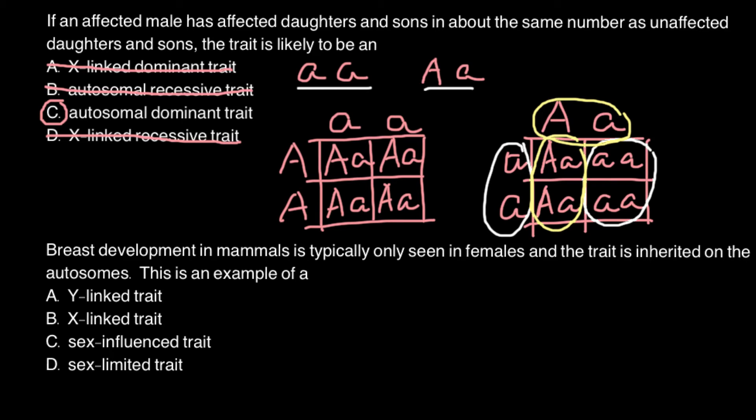And next question: breast development in mammals is typically only seen in females, and the trait is inherited on the autosomes. This is an example of, and here are four answers to choose from: answer A, Y-linked trait; answer B, X-linked trait; answer C, sex-influenced trait; and D, sex-limited trait.